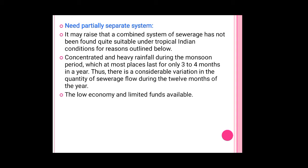Why is it necessary to define this partial separate system? There are some reasons we use partial separate systems where the combined system and separate system are not used. The combined system of sewage has not been found quite suitable under tropical Indian conditions. One reason is the concentrated and heavy rainfall during the monsoon period, which at most places lasts for only 3 to 4 months in a year.